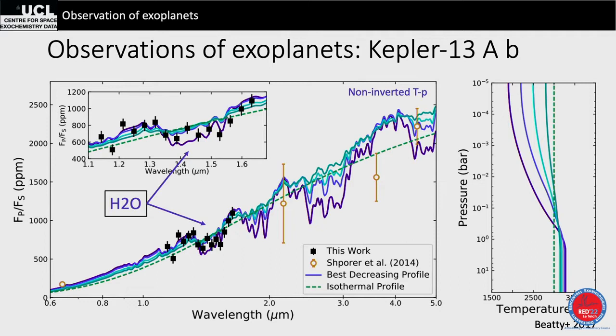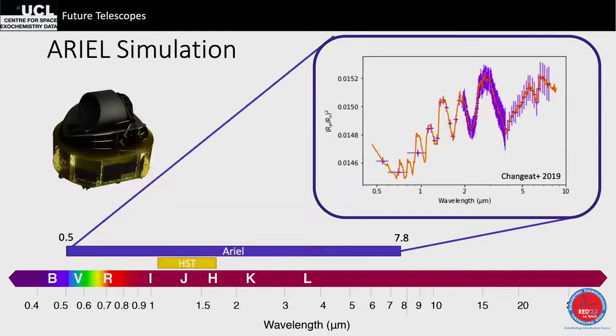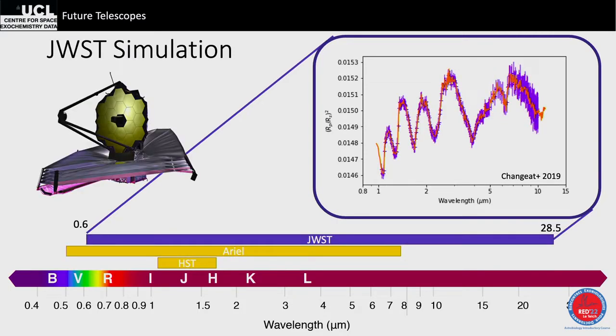For the next decade of exoplanet surveys, HST's wavelength range is very limited. Ariel provides much larger wavelength coverage. JWST covers an even broader range. The more wavelength coverage you have, the more atmospheric altitudes you probe and the more molecules you can detect. Both Ariel and JWST are going to be extraordinary for this purpose.